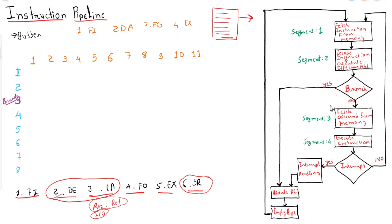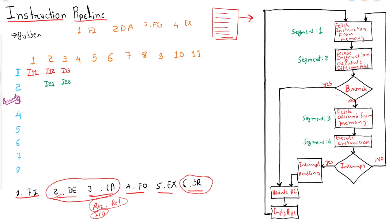This may seem a little confusing, so let's understand how it takes place. Consider instructions 1, 2, 3, 4, 5, 6, 7, 8 — and instruction 3 is the branch instruction, marked with a different color. At the first clock cycle, instruction 1 is in segment 1. At the next clock cycle, instruction 1 moves to segment 2 and instruction 2 enters segment 1.